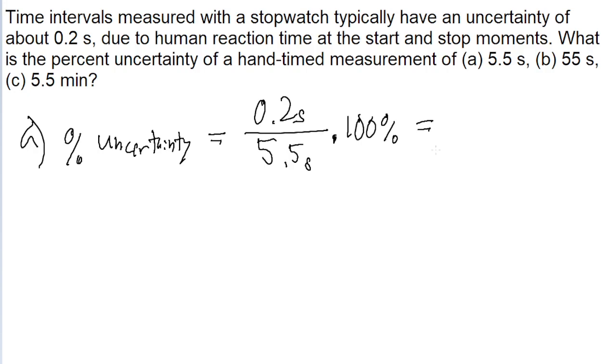If we put that into a calculator, we find a percent uncertainty of about 3.636%, which the book rounds to 4%. So 4% is our answer for part A.